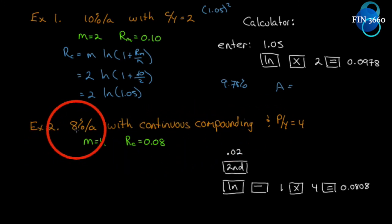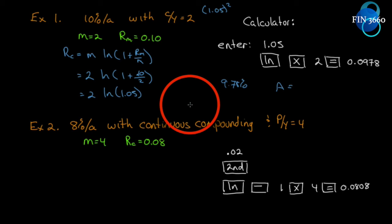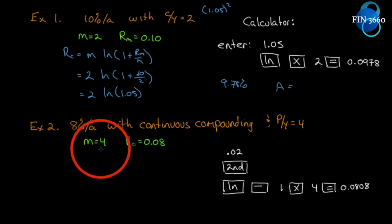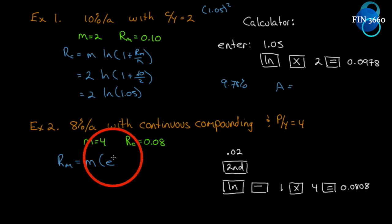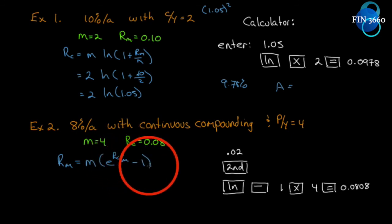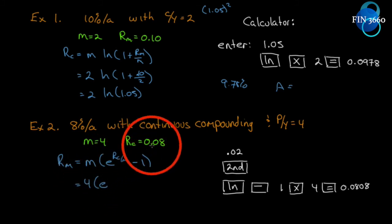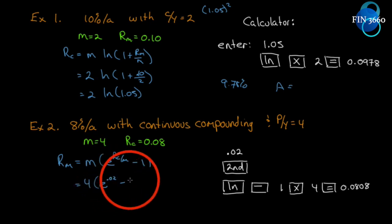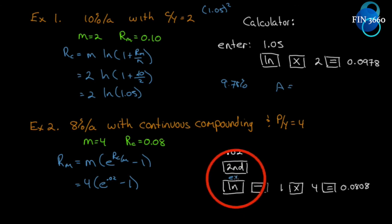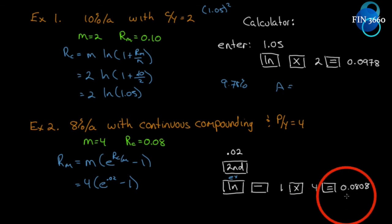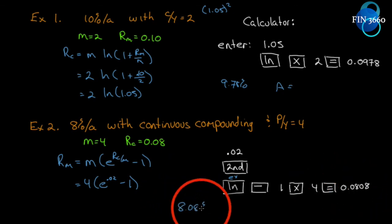Now let's work backwards. We know the continuous compounding rate is 8%. What rate would be required if it were only compounded quarterly? Here m=4 and rc=0.08. Using rm = m(e^(rc/m) - 1), we get rm = 4 · (e^(0.08/4) - 1) = 4 · (e^0.02 - 1). On the calculator: enter 0.02, hit second function then e^x, subtract 1, multiply by 4, and you get 8.08%.